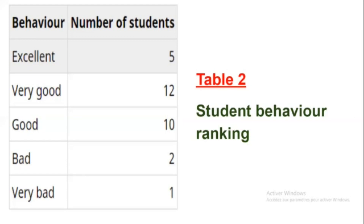Correspondence between these numbers and categories used in Table 2 could appear as a number from 1 to 5: 1 for very bad, 2 for bad, 3 for good, 4 for very good, and 5 for excellent.